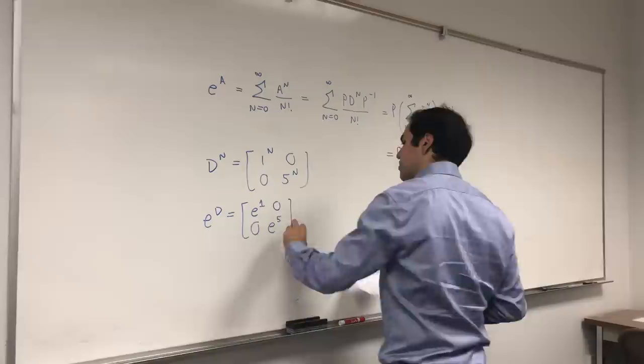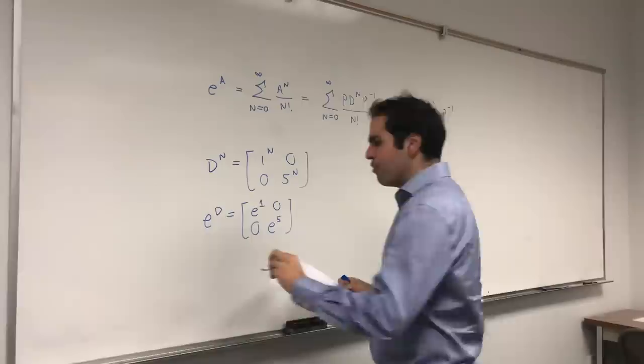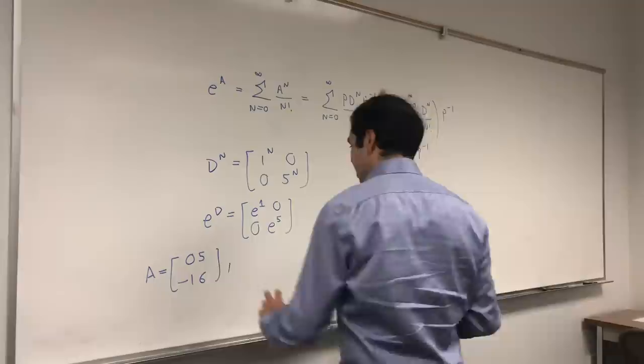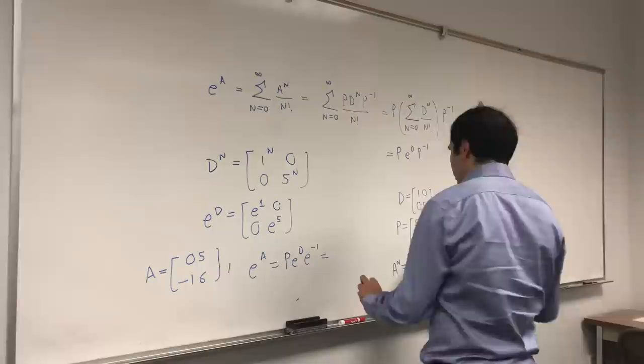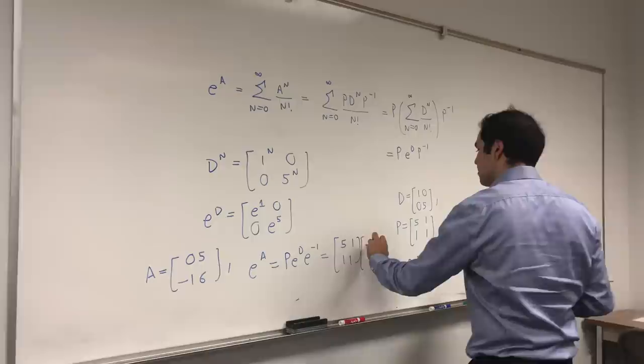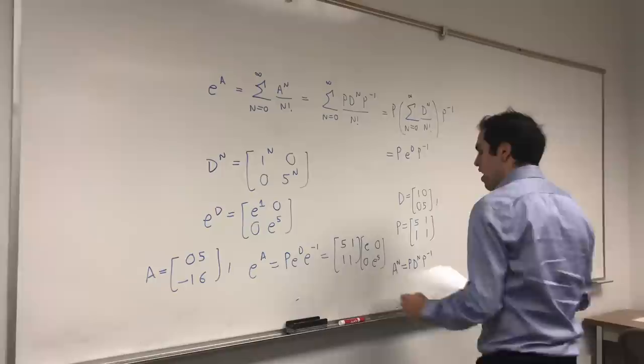And, let's do this now to calculate E to the A. So, remember, A was our matrix, 0, 5, minus 1, 6. Well, then, by what I said, E to the A is then just PE to the D, P inverse, which is just 5, 1, 1, 1. Now, well, E to the 1 is E, 0, 0, E to the 5th, and 5, 1, 1, 1 inverse.